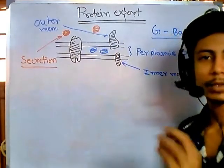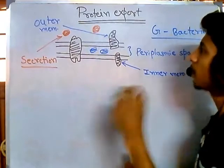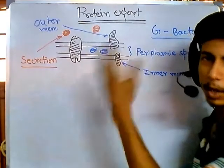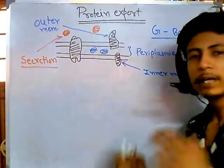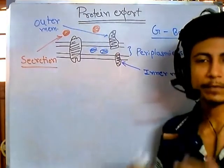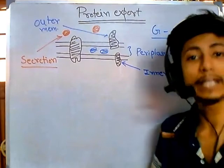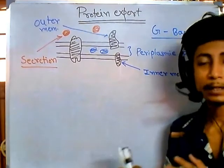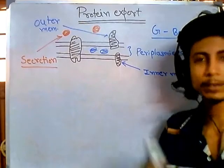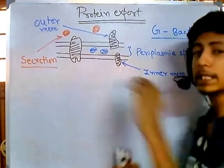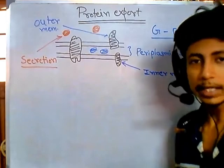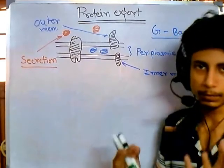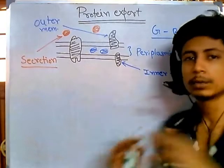In this video I'll talk about the export of proteins into the membrane — whether inner or outer membrane. If your protein is globular with more hydrophilic residues, it has more trouble crossing the membrane because the membrane is hydrophobic in nature. So if your protein is hydrophilic, it is a difficult job for it to pass through the membrane.